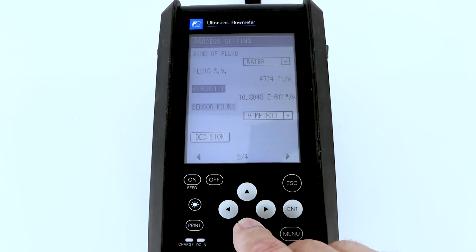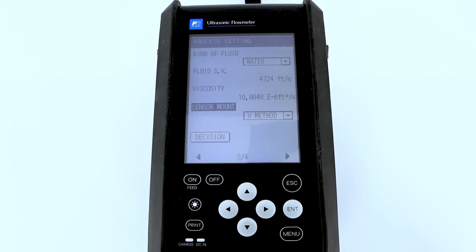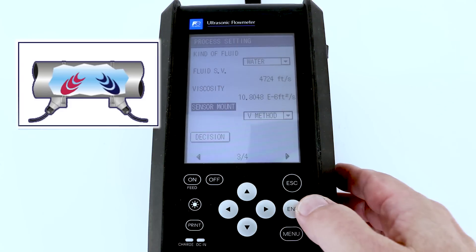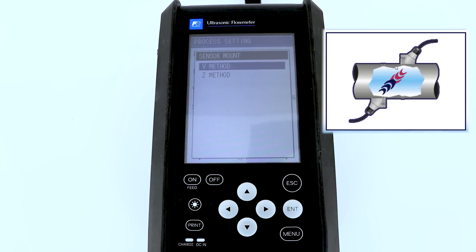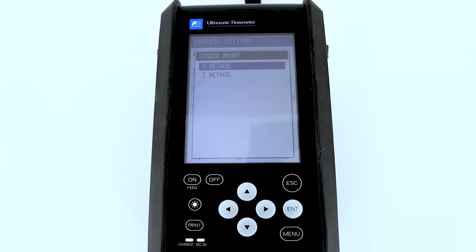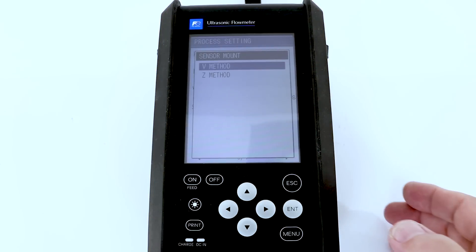Now, the sensor mount, you have two choices. Again, hitting the enter button, the V method and the Z method. The V method is basically the transducers are on the same side of the pipe, which is the normal install for applications, say, half inch to 24 inches. The Z configuration are when the two sensors are across the pipe, one in each side. In that case, they're normally used on very large pipe applications, in some cases 24 inches and larger. So for our application, we're going to select the V method.